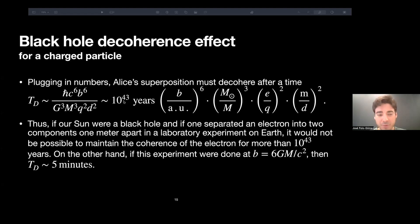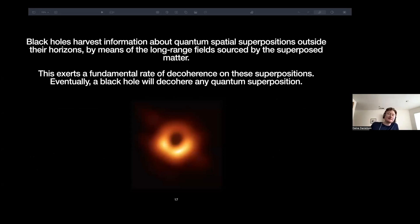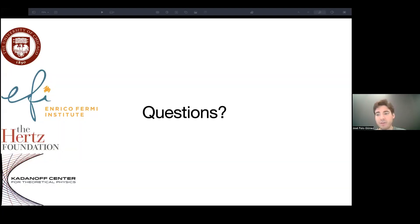Sorry, you're over time now, so please wrap up. Yeah. So for a charged particle, we find this estimate, which you can find in our paper, for the amount of time that Alice can do a superposition outside a black hole and the same effect holds for gravitation in the gravitational case due to superposed Newton fields. And so what we find is that in essence, black holes harvest information about quantum superpositions outside their horizons by means of long range fields sourced by the superposed matter. And eventually a black hole will decohere any quantum superposition in its exterior. And we think this has some importance for any theory of quantum gravity. Thank you. Thank you for your time.